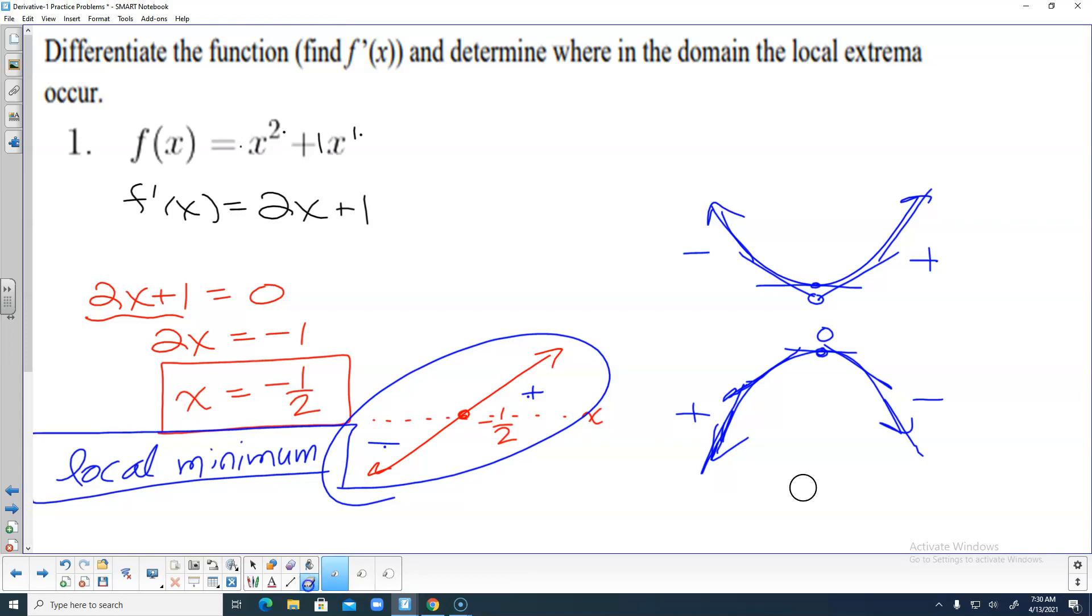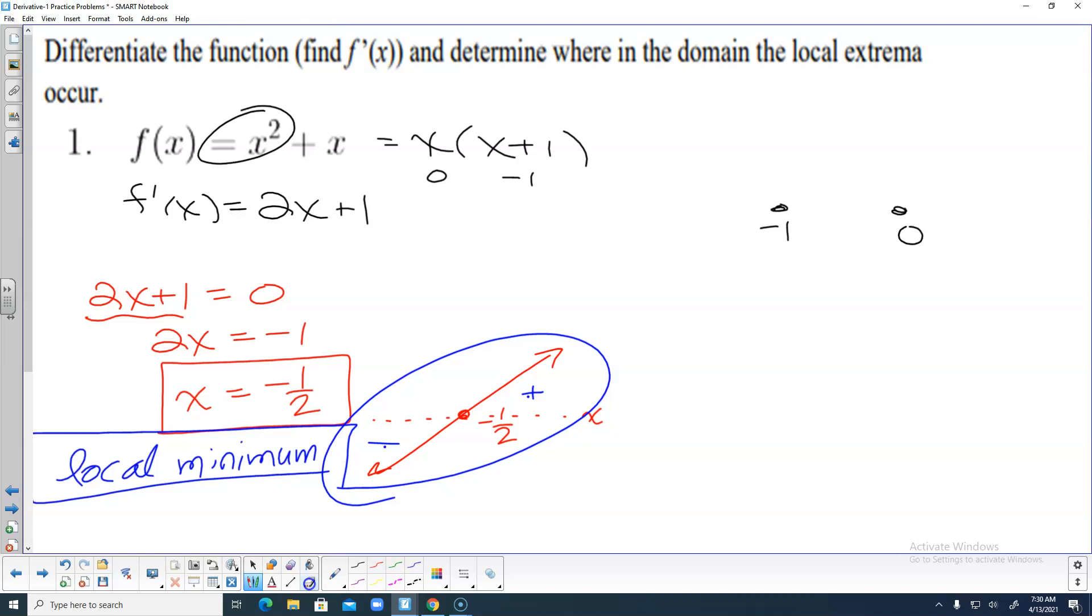To verify, take the original function, x squared plus x. If I factor that, it's x times x plus 1, which means the zeros are 0 and negative 1. We have negative 1, then 0. It's positive x squared, so the end behaviors are positive, thinning on both ends.